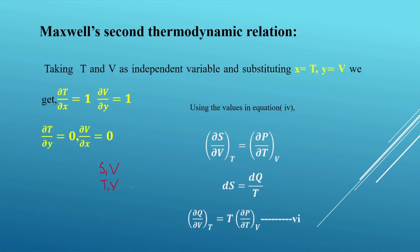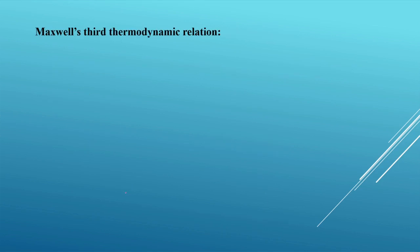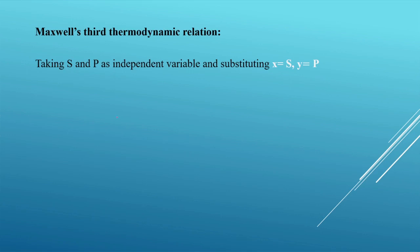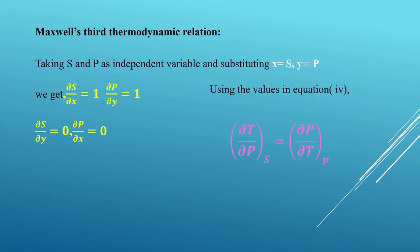For the third Maxwell relation, we take x = S and y = p. We get ∂S/∂x = 1, ∂p/∂y = 1, and ∂S/∂y = 0, ∂p/∂x = 0. Substituting into the general equation gives (∂T/∂p) at constant S = (∂v/∂T) at constant p, or in terms of q: (∂T/∂p) at S = T·(∂v/∂q) at v. That is our third thermodynamic relation.